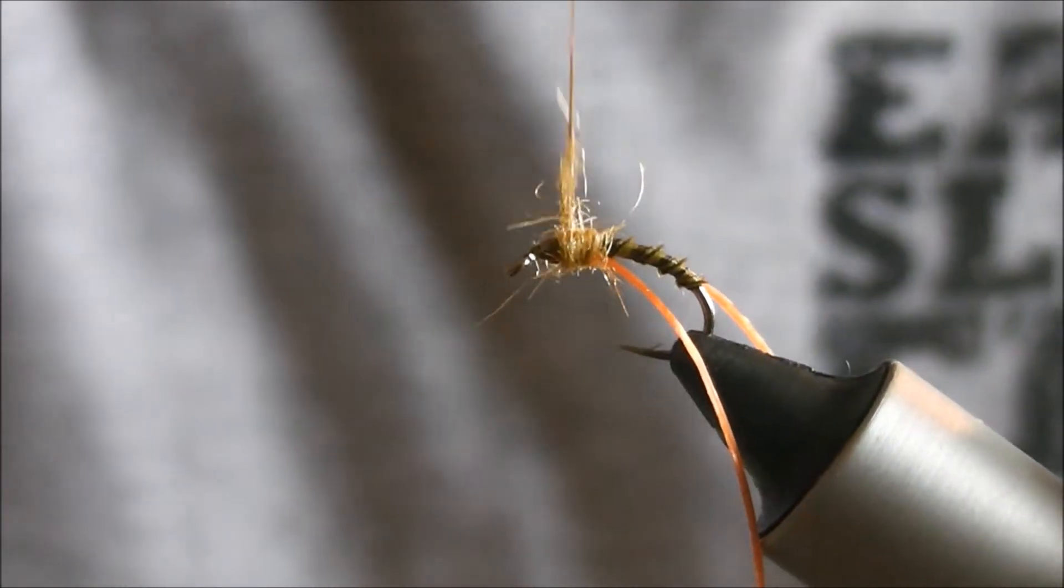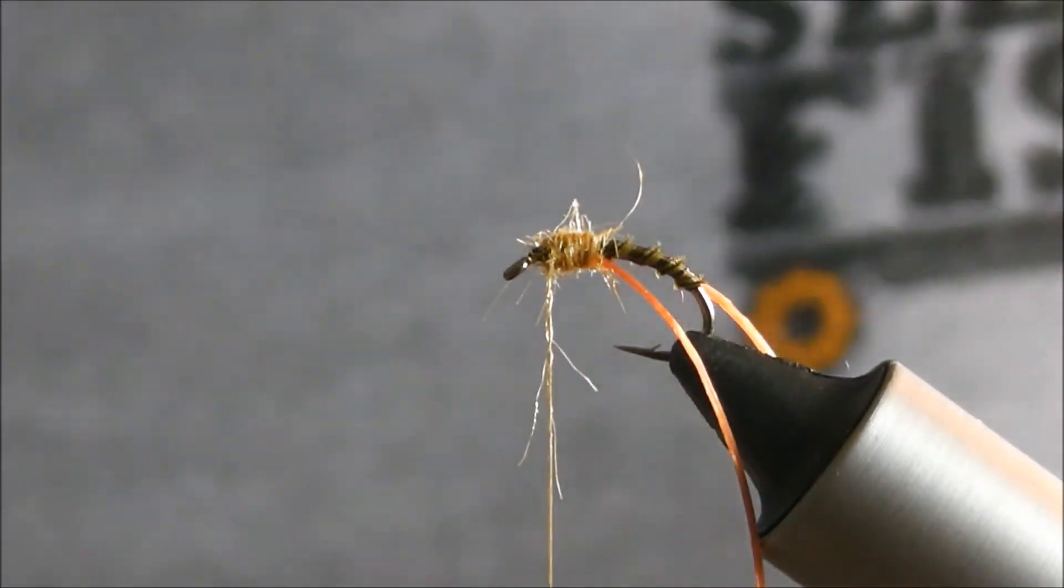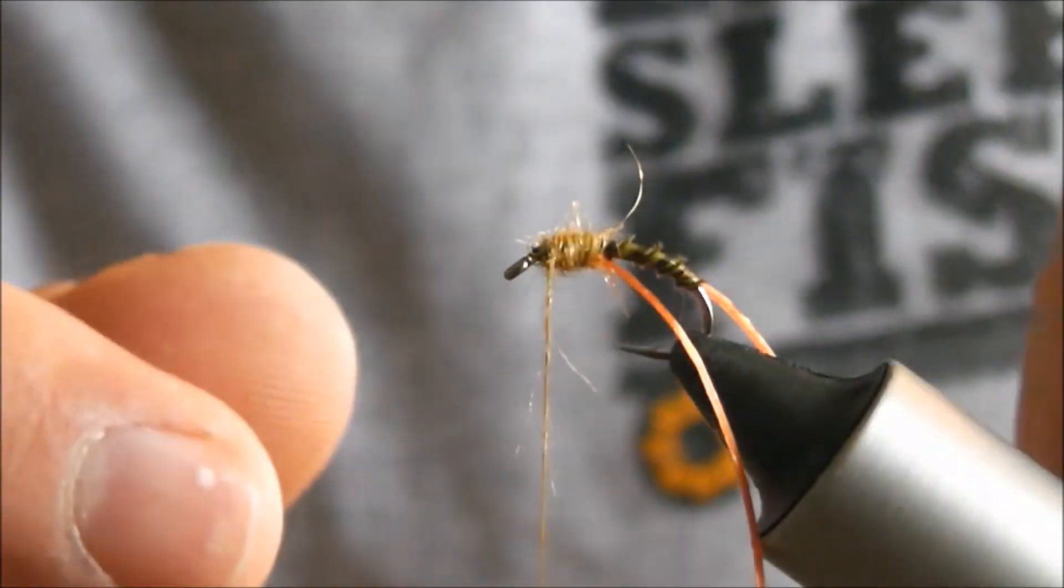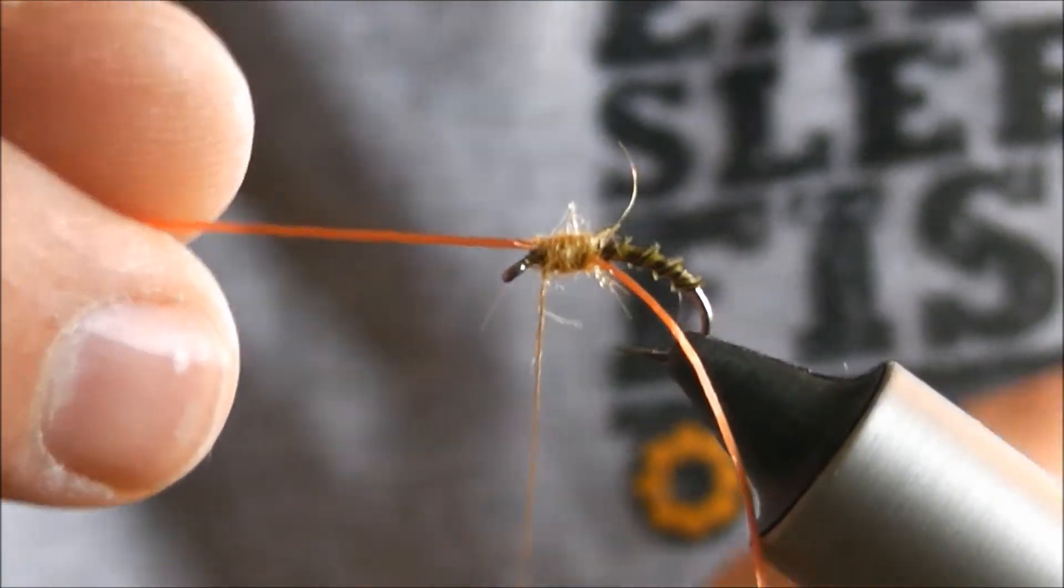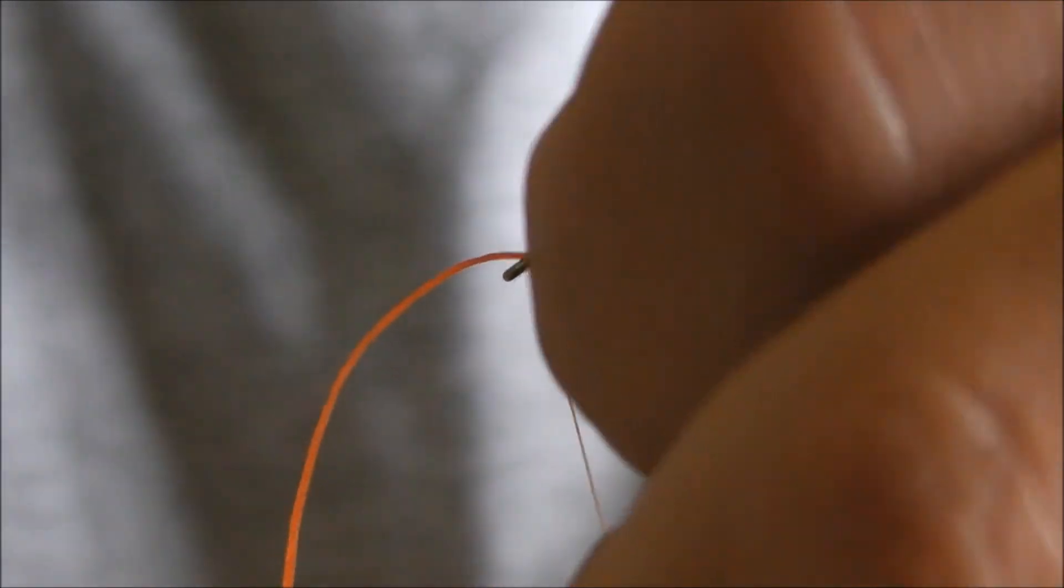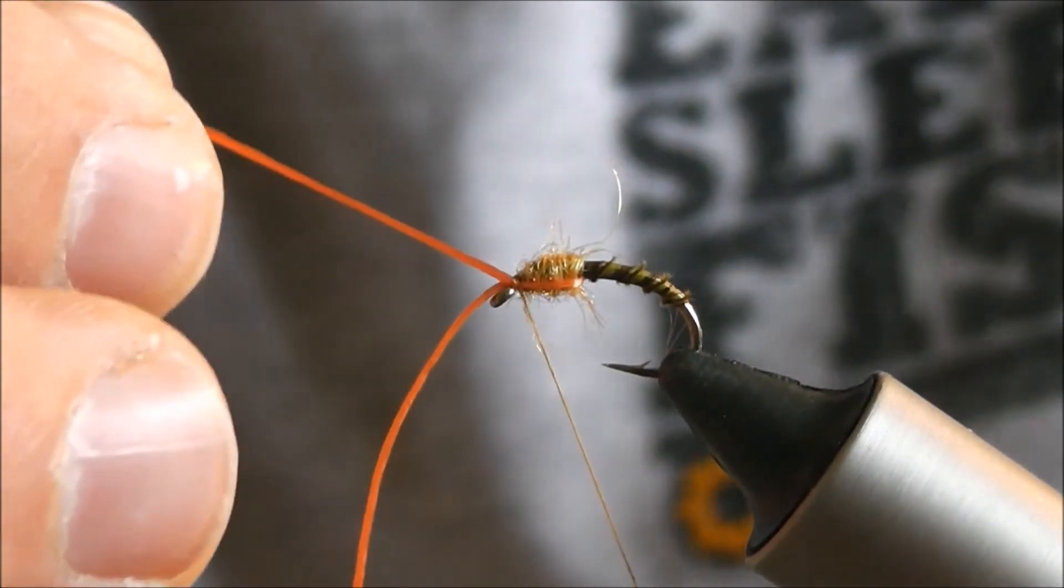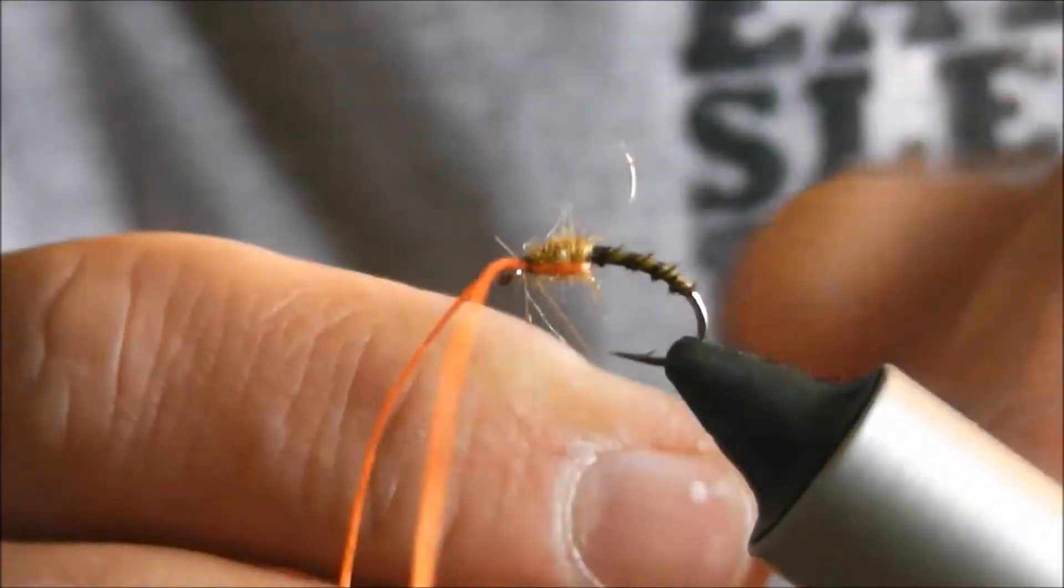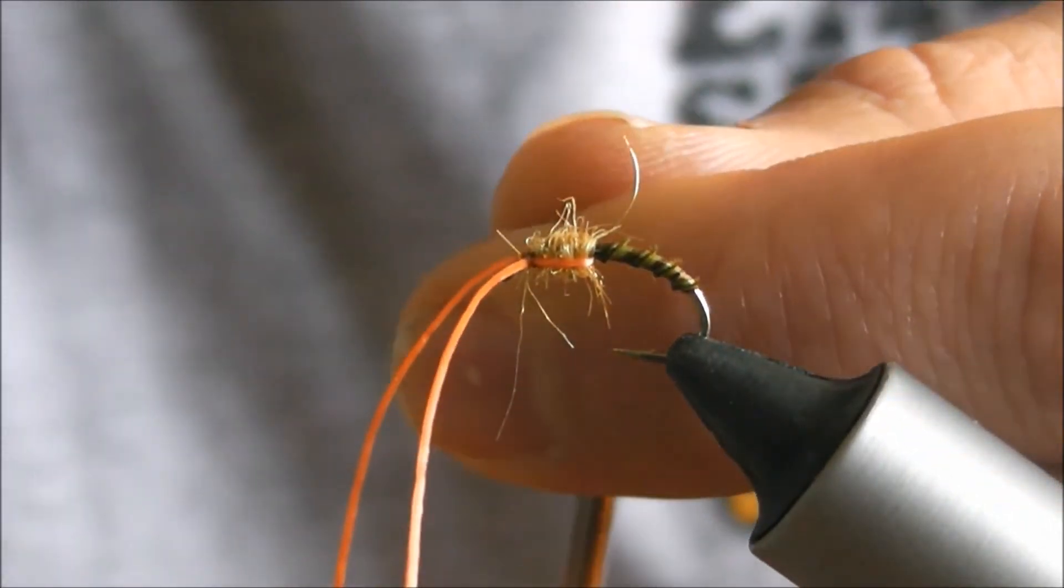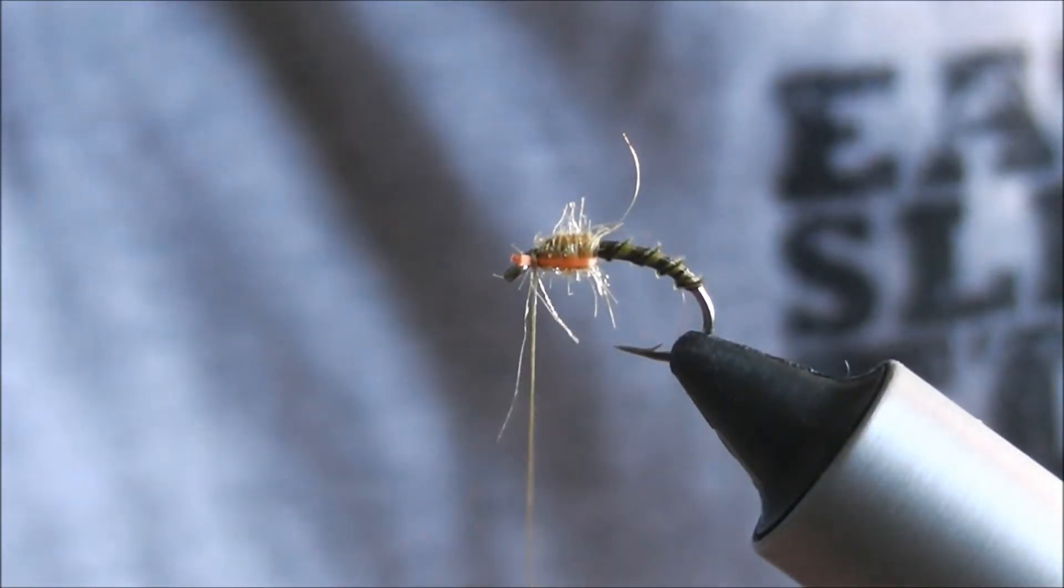Around your thorax. Don't go all the way to the eye, leave a couple of mil. And then bring your orange flexi floss forwards, one on one side and one the other, up to the top. So there, your little wing buds.